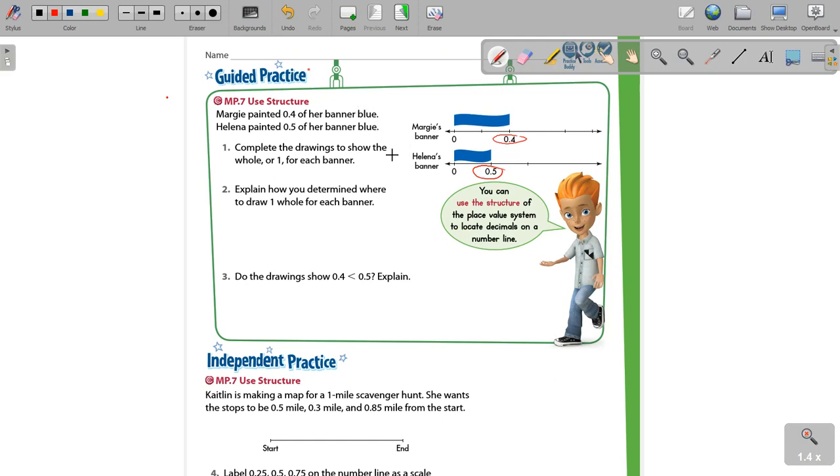So the goal here is that for the first one, we're going to complete the drawings for each banner. So for Helena's, because we know 0.5 is also one half, that means that the one whole mark must be right here. And you can see that just based on looking at it. And so the rest of her banner is going to come all the way out over here. Now, your drawings probably look a little better than mine, but there you go.